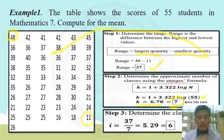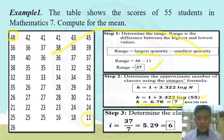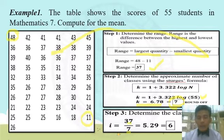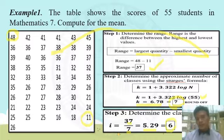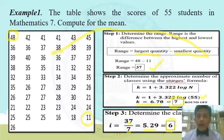Step 3: we need to determine the class interval. Class interval equals the range over K. R equals 37 and K equals 7, so 37 divided by 7 equals 5.29. Remember, i is rounded up. So we round up 5.29 to the whole number 6. That is the value of our class interval. Please take note the values of R, K, and i.